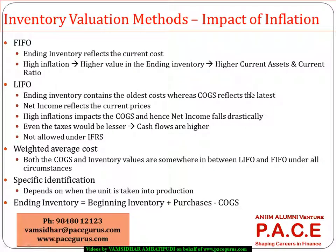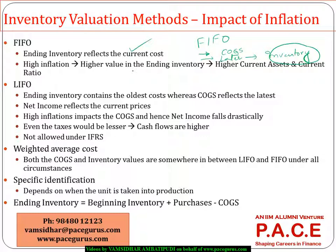Looking at FIFO — first-in, first-out — the goods that are purchased earlier go into cost of goods sold, and the goods that are purchased later, meaning very recently purchased goods, go into inventory. That is how the first-in, first-out mechanism works: the recently purchased ones go into inventory, whereas the older purchased goods go into cost of goods sold. The ending inventory therefore reflects the latest and current cost situation.